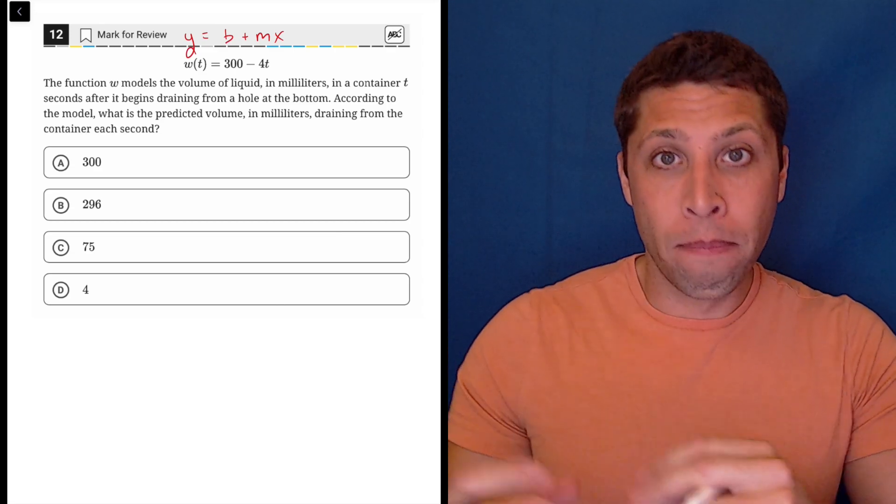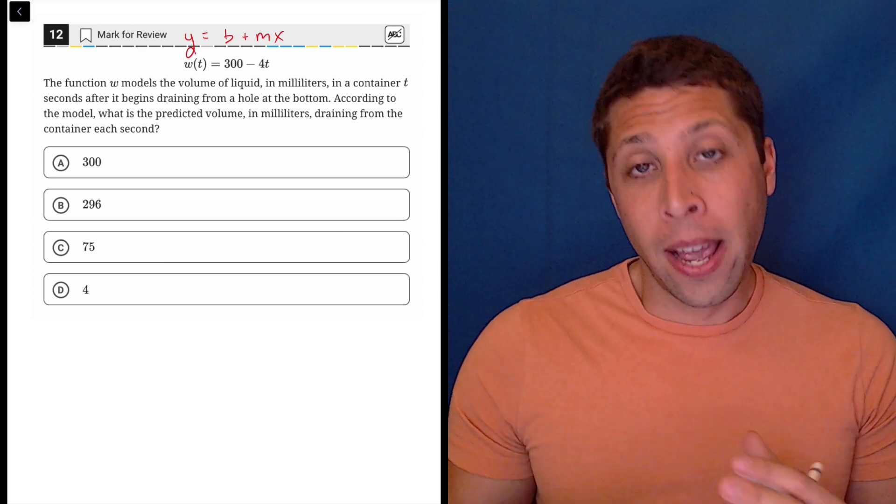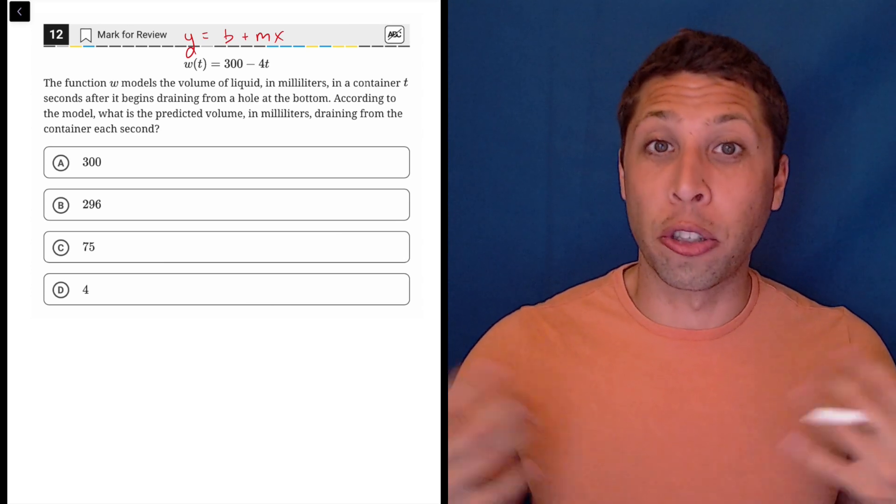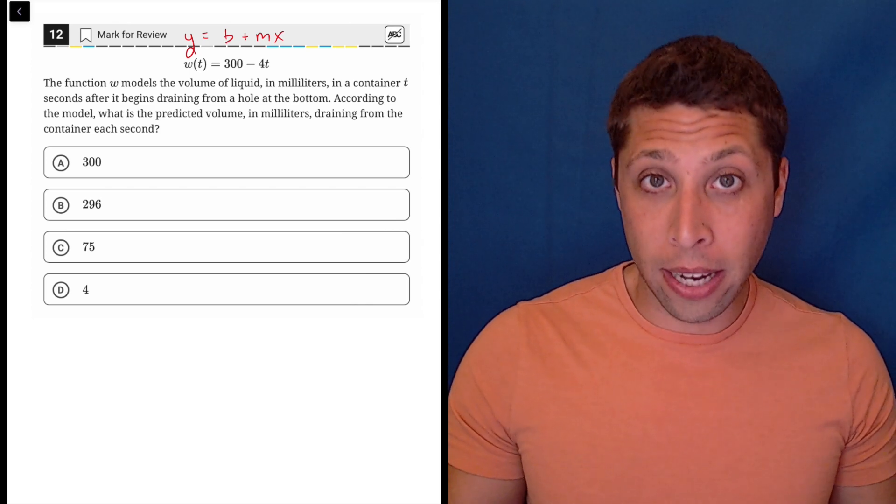So there's a slope that is attached to a variable, and then there's this other piece that's either added on, subtracted on, whatever, that kind of represents the starting point, and that's how we should think about it here - they're really asking for a slope.